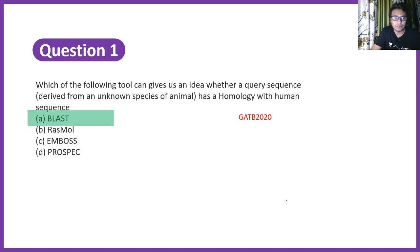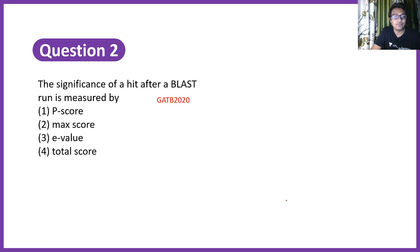Second question says the significance of a hit after a BLAST is measured by P score, Max score, E score, and total score. Again let me give the answer and then we'll explain this thing together. The E value is the important score which tells you the significance of a BLAST run.